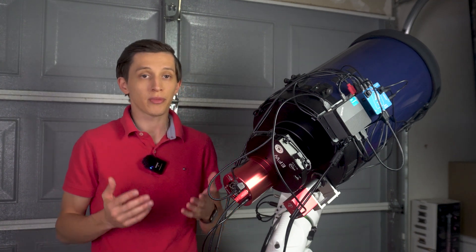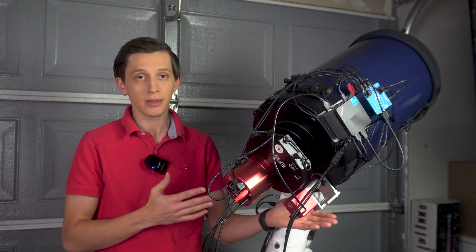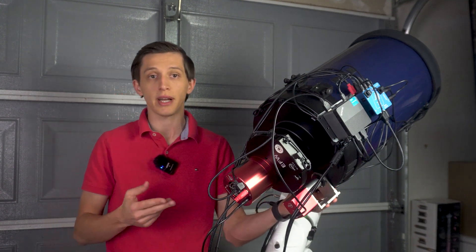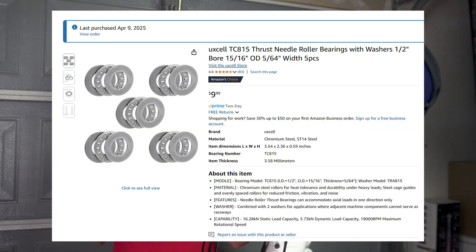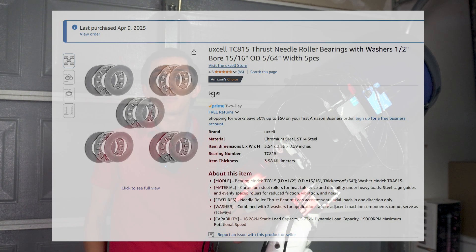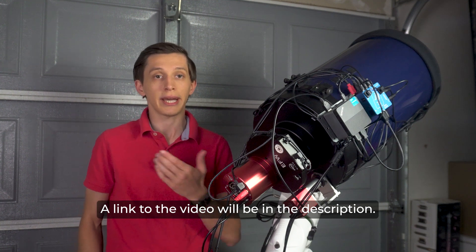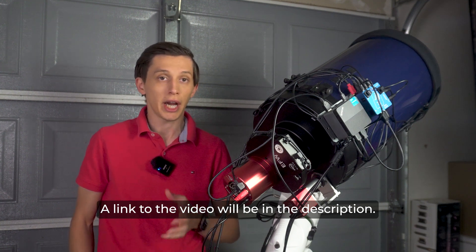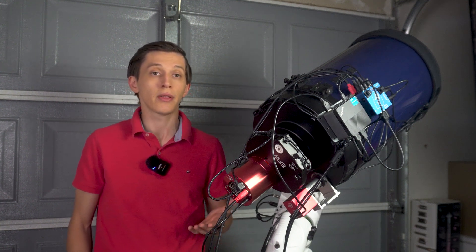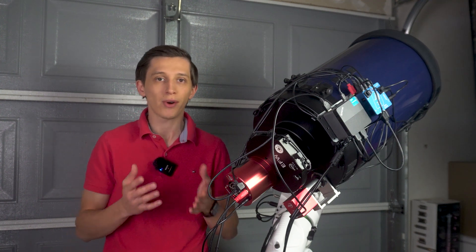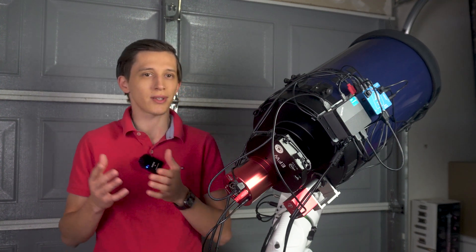I decided to try improving the performance of the focuser of the telescope itself by installing these bearings that you can see on the screen. The idea came from MidMod's channel on YouTube where the same modification was done on an 8 inch Meade telescope. I ordered bearings on Amazon, installed them, and guess what - my focusing issue was resolved for just under ten dollars.